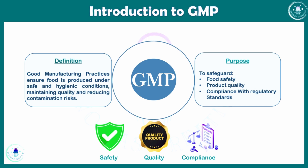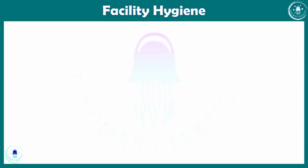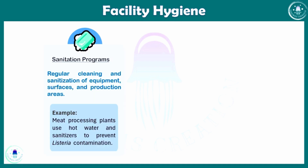The second important aspect is facility hygiene. In order to produce food we need a hygienic facility to maintain food quality. First is the sanitation program — regular cleaning and sanitization of equipment, surfaces, and production areas are very important. For example, meat processing plants adhere to strict cleaning schedules using hot water and sanitizers to prevent Listeria monocytogenes contamination.